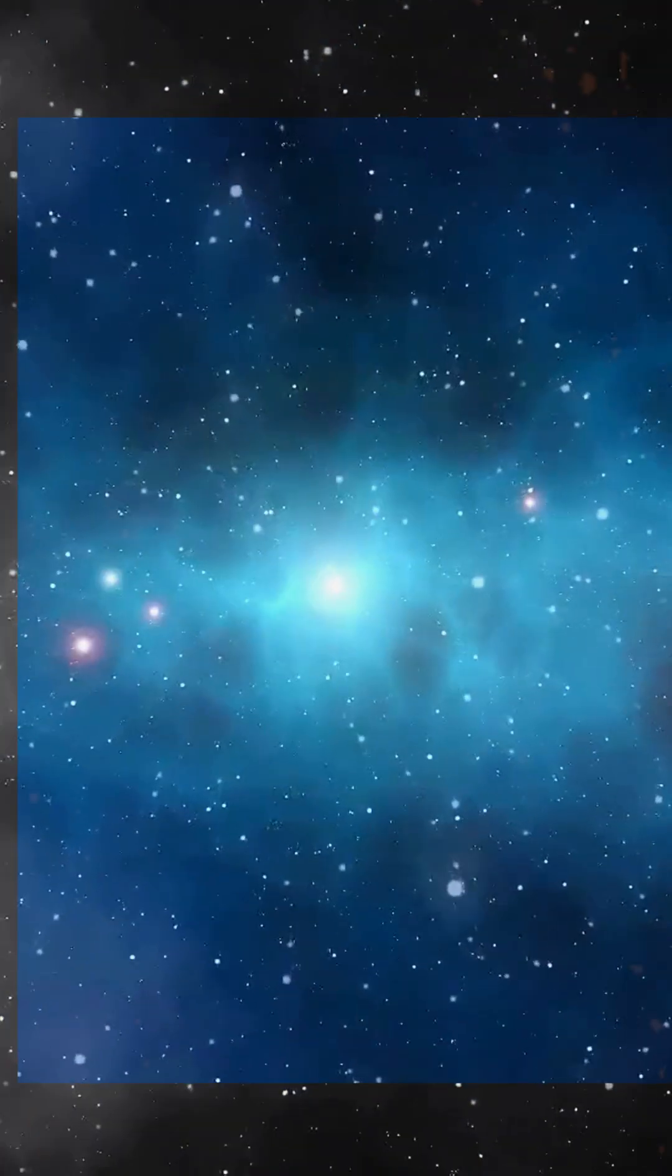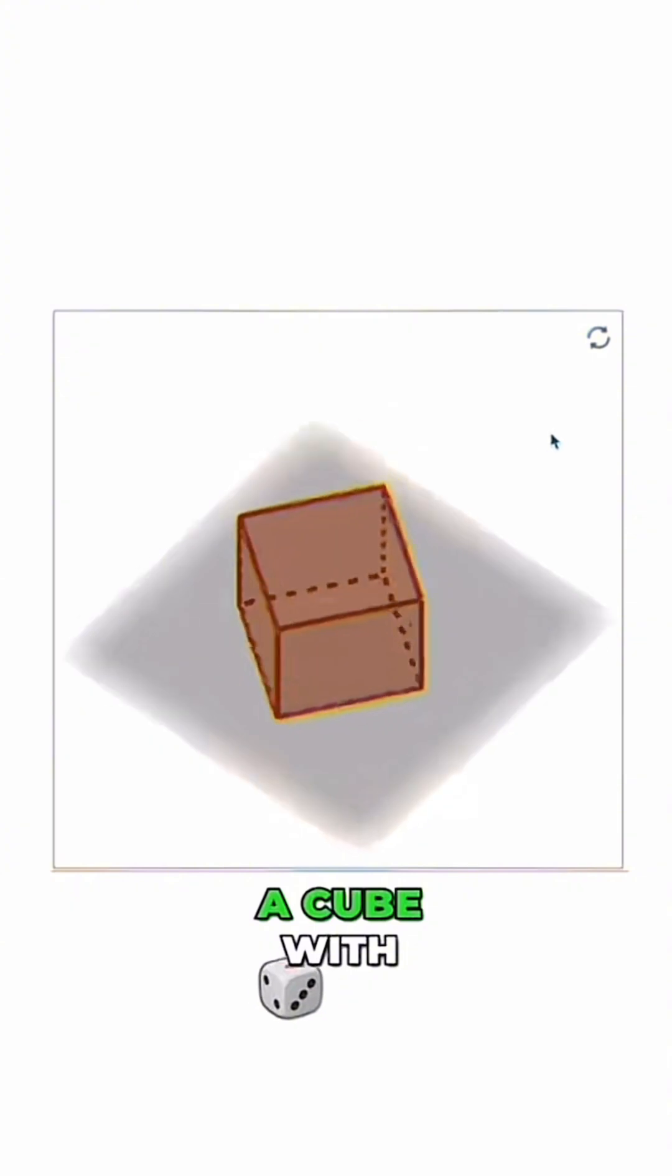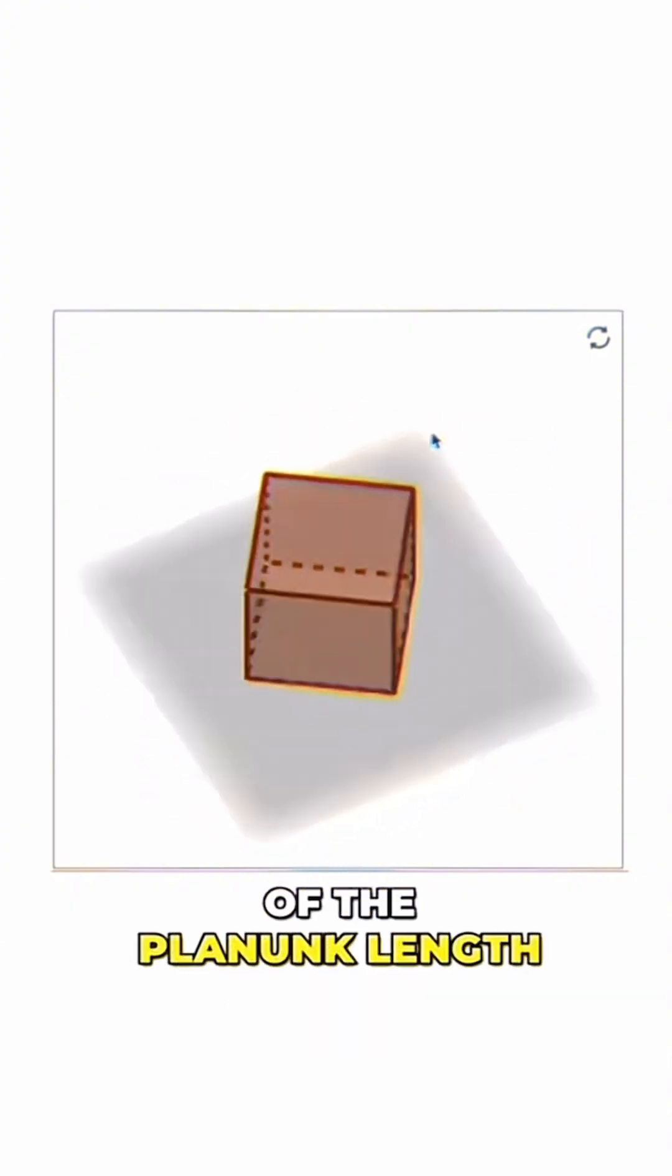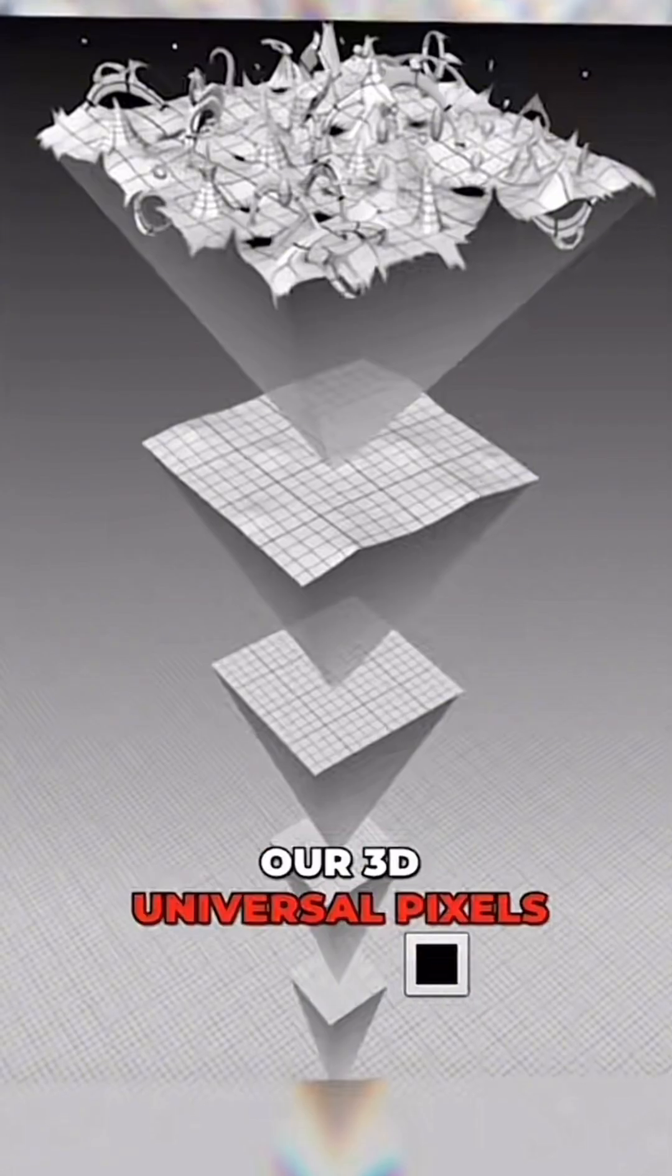All we need to do is define a cube with the side lengths of the Planck length, and we have our 3D universal pixel.